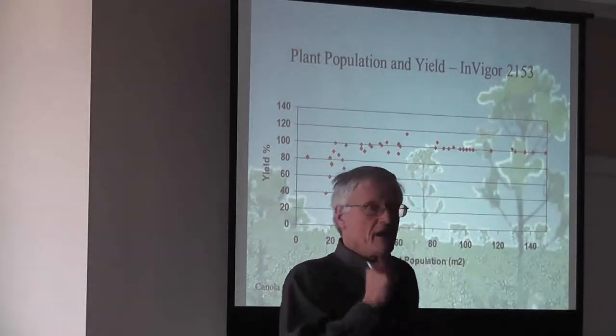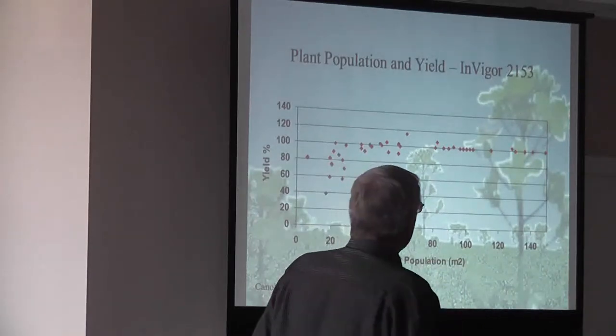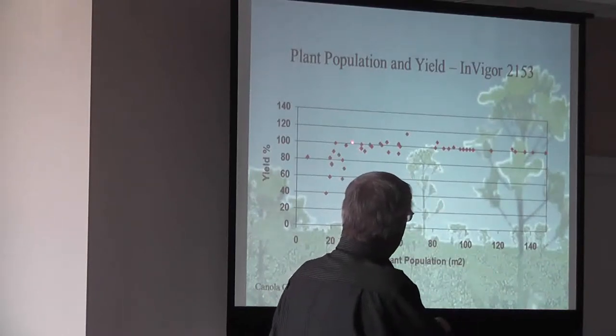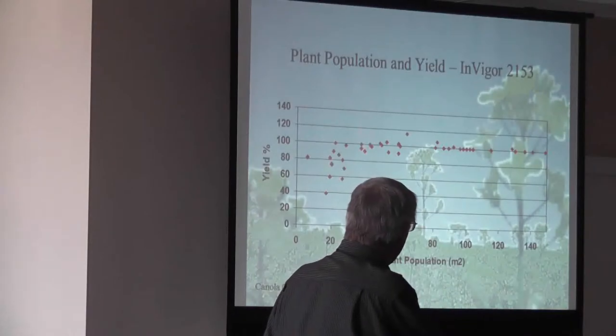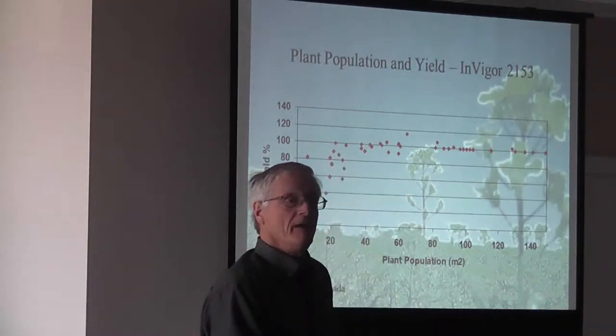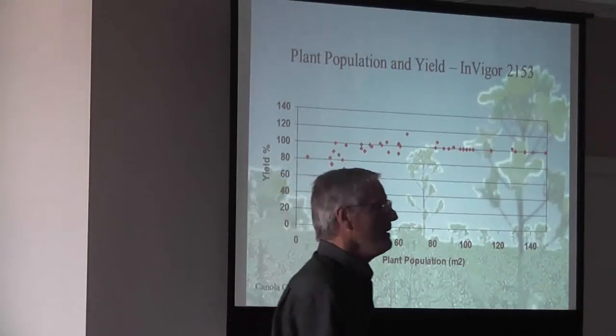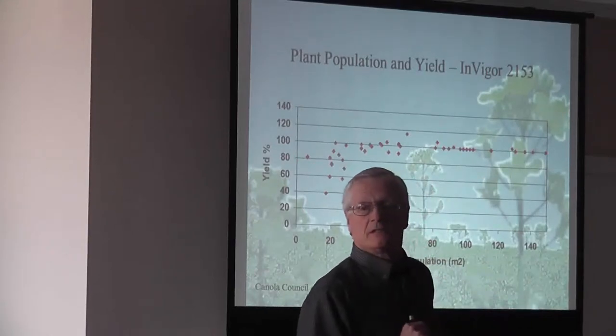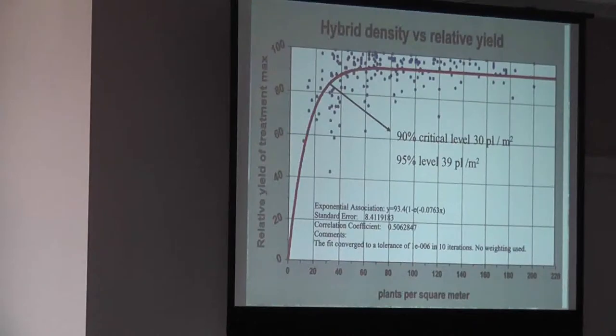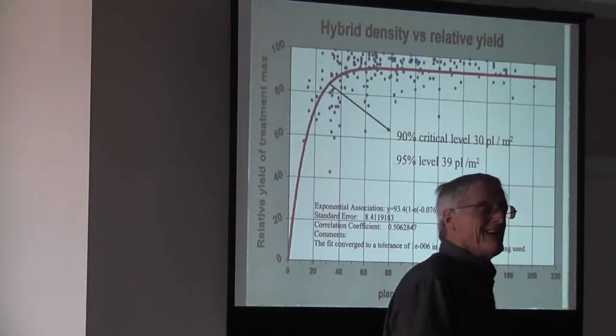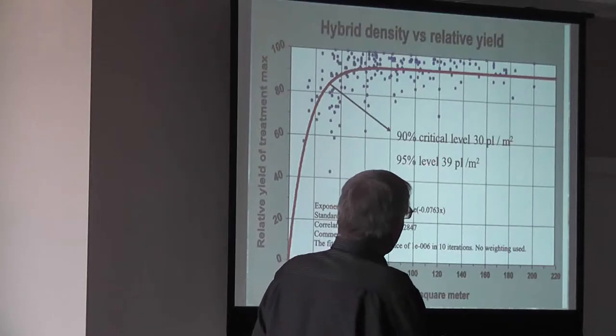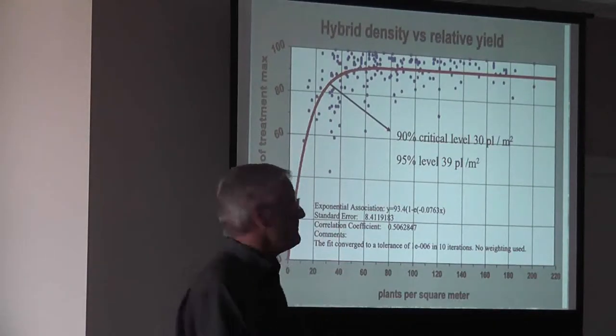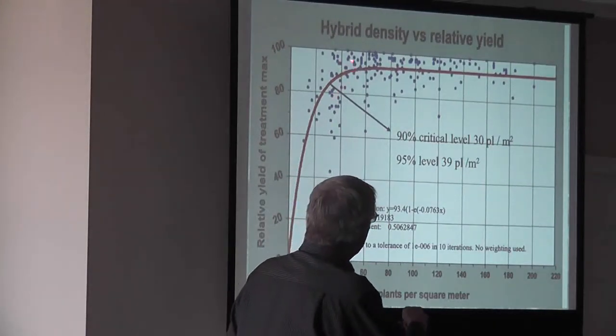This is taking a different look at it with all the data. And you can see at the 90% critical level. It's about 30 plants per square meter or 3 per square foot roughly. And that's the critical area. You can see a whole drop in yield. Yeah, there's some over here at even 6 plants per square foot. And then it's a flat line.